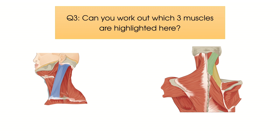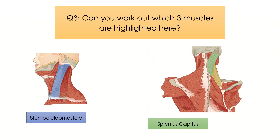In blue we have sternocleidomastoid, in green we have splenius capitis and in yellow we have levator scapulae.